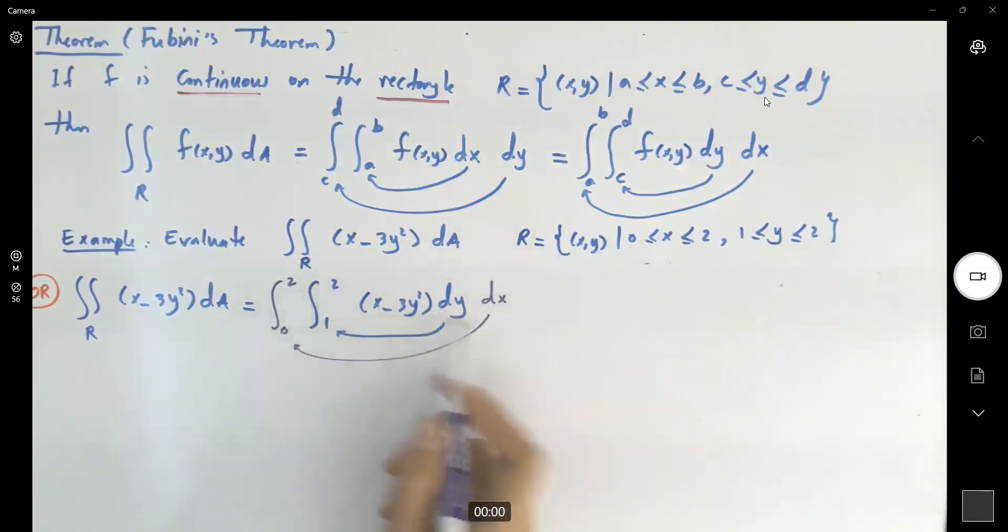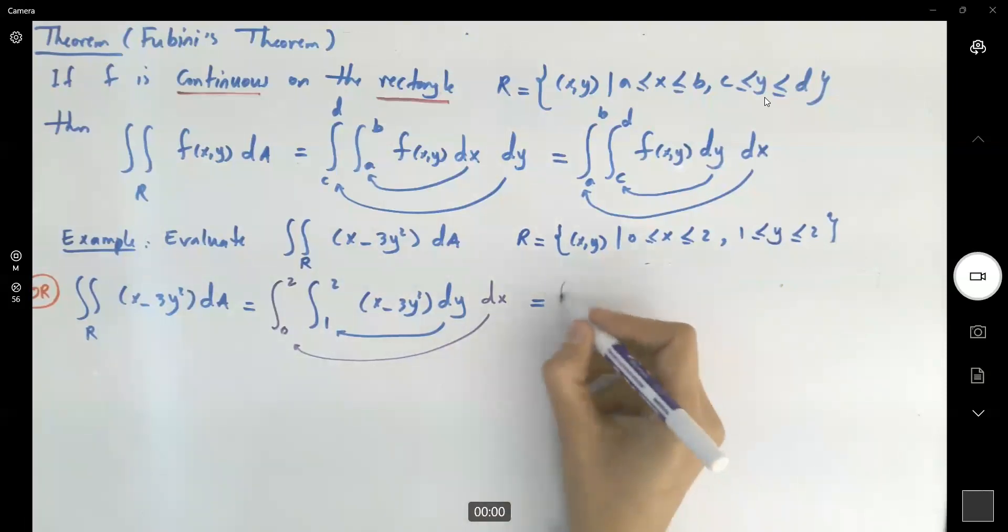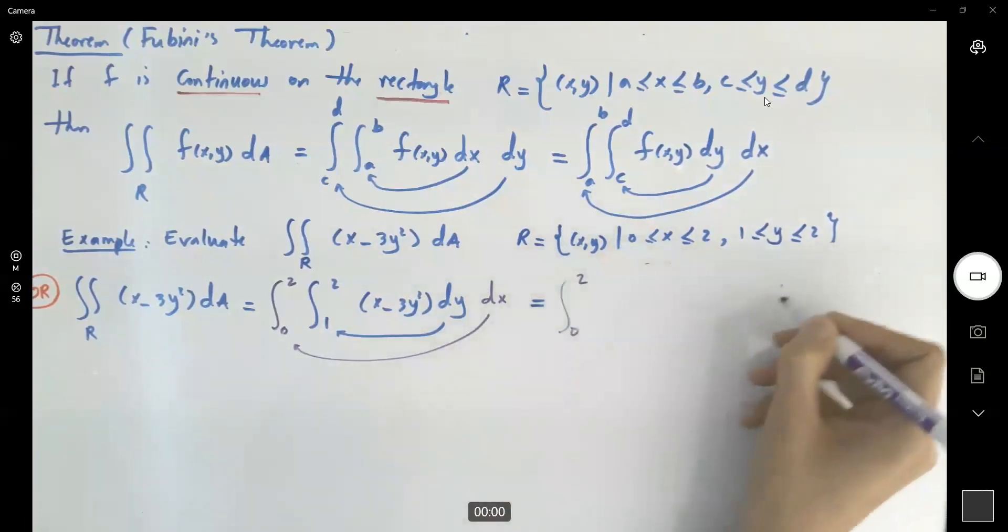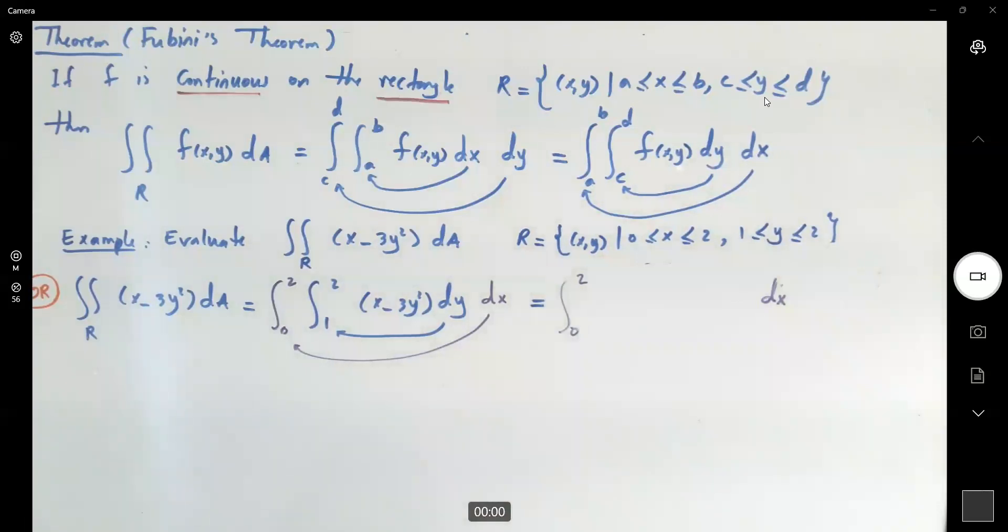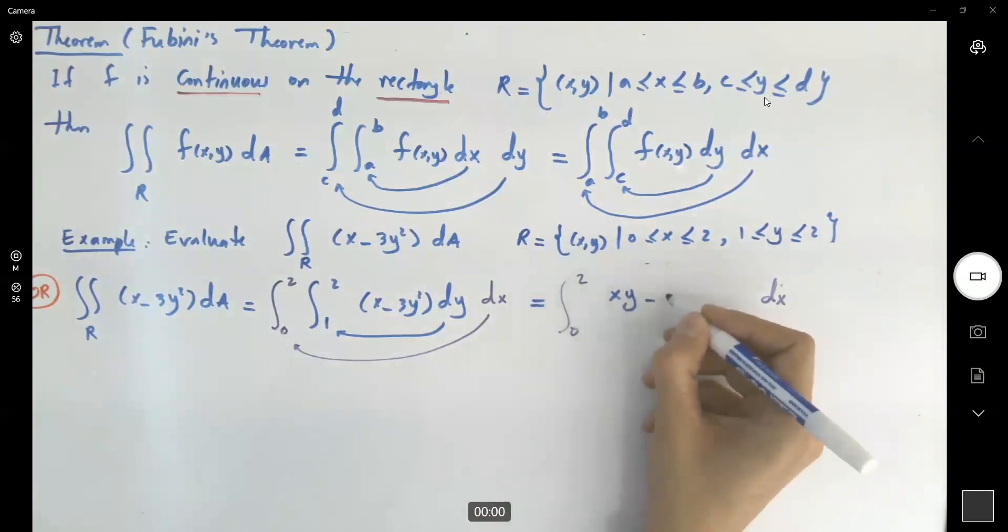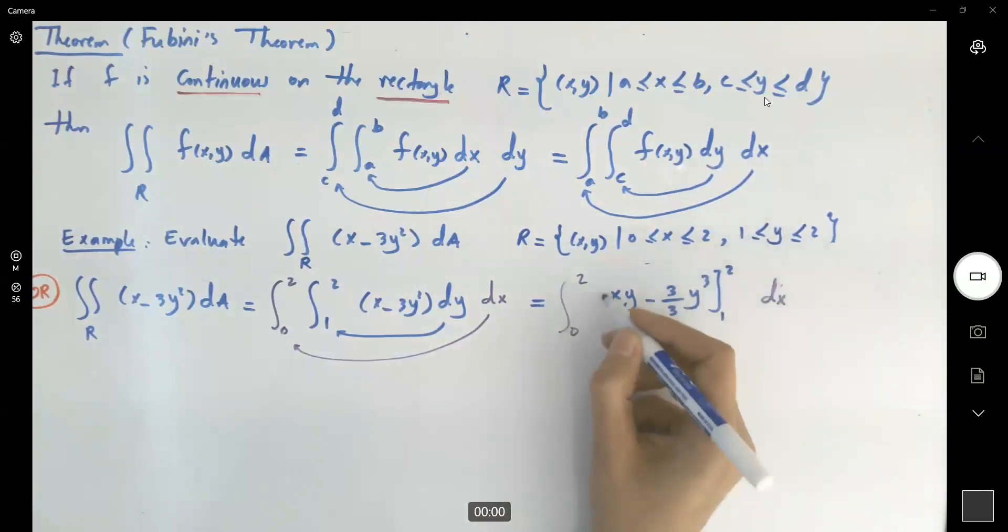You always start by taking the integral with respect to the inner variable that you're working with. Sometimes you can separate these two integrals, but it's a special case we're going to discuss later. This guy is equal to your outer integral with respect to x, 0 to 2, and let me write dx here. And we get xy minus 3 divided by 3y³. And here y between 1 and 2. This guy is equal to: